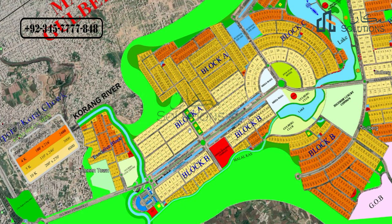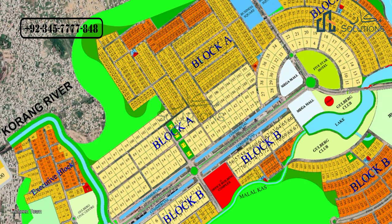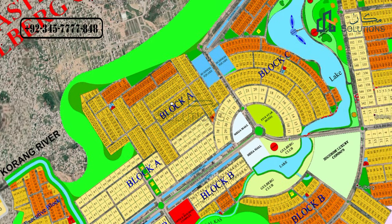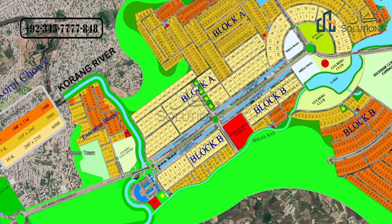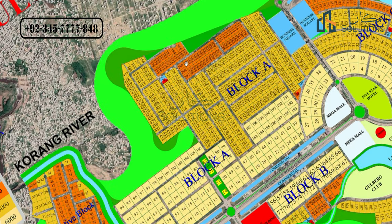This is Block A and its plot sizes. In Block A, there are 367 plots total. For 10-kanal plots, there are 121. For 5-kanal plots, the total number is 190. For 4-kanal plots, the total number is 56.